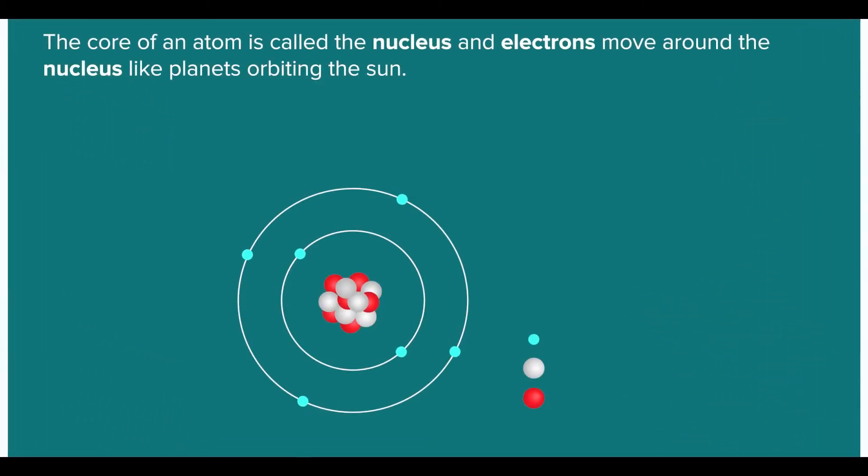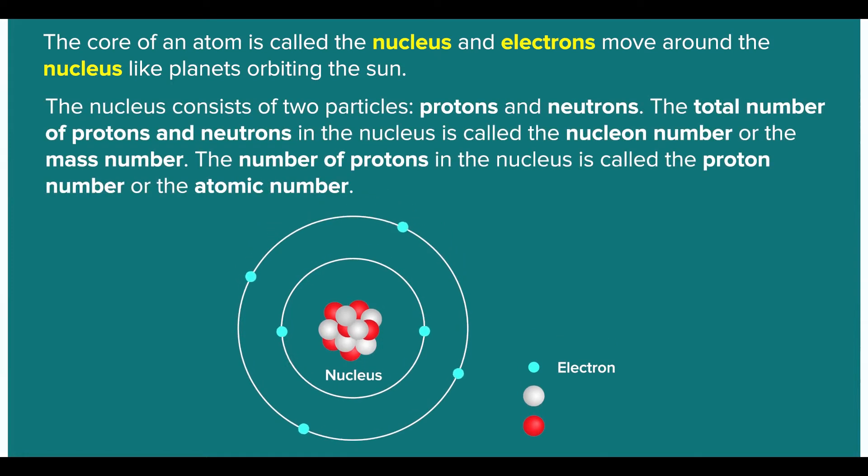The core of an atom is called the nucleus, and electrons move around the nucleus like planets orbiting the sun. The nucleus consists of two particles, protons and neutrons. The total number of protons and neutrons in the nucleus is called the nucleon number or the mass number. The number of protons in the nucleus is called the proton number or the atomic number.